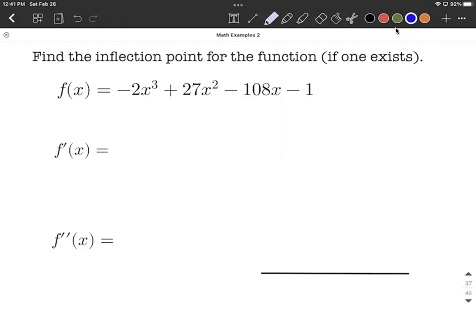Okay, we're given a third degree polynomial, and we want to know if it has an inflection point or not. So to find an inflection point, what we want to do is find the second derivative and figure out when it equals zero. So before we get the second derivative, we need to find the first derivative.